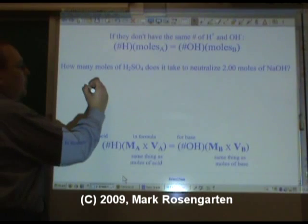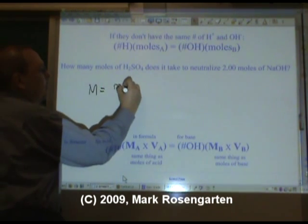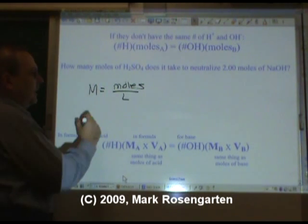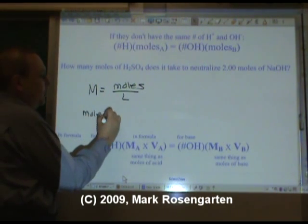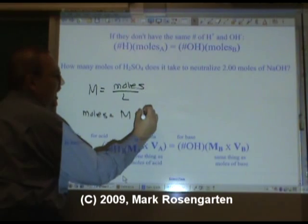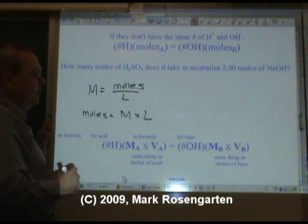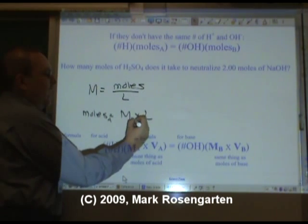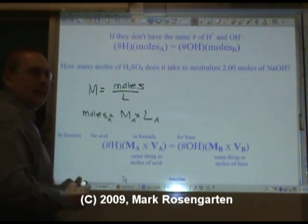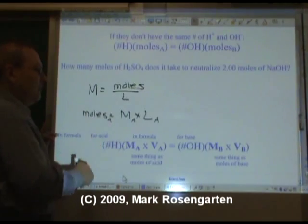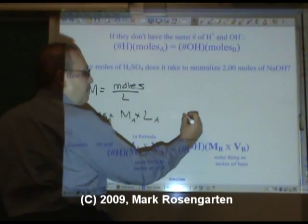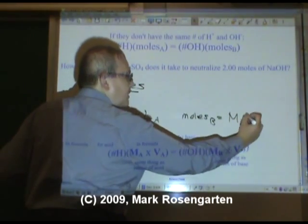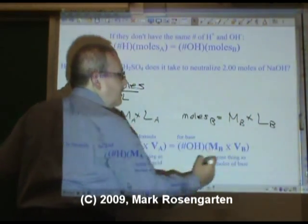Now, if you remember, we said that molarity was equal to moles divided by liters. Well, if that's the case, moles is equal to molarity times liters, which means moles of acid would be the molarity of the acid times how many liters of acid you have. And that would mean that moles of base is equal to the molarity of the base times how many liters of base you have.